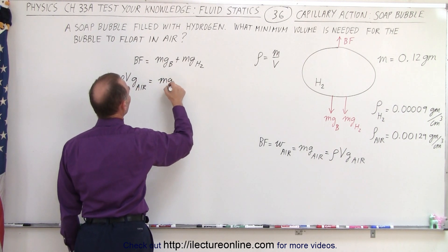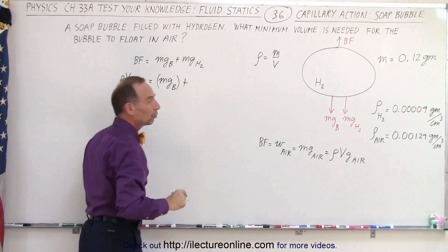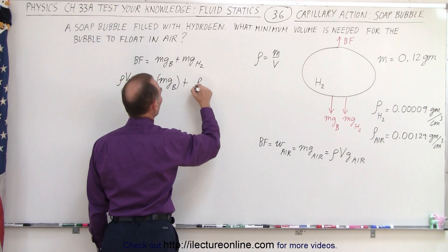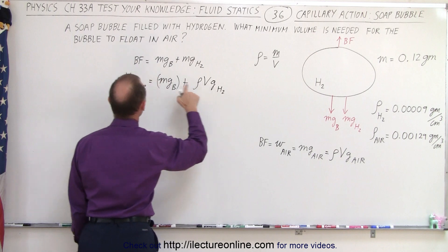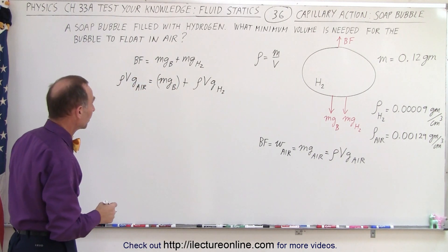We can leave it as mg of the bubble. And then we add to that the weight of the hydrogen inside. And so that would be the rho vg of the hydrogen. Notice that the volume has to be the same for both. And that's what we're looking for. We're looking for the volume.